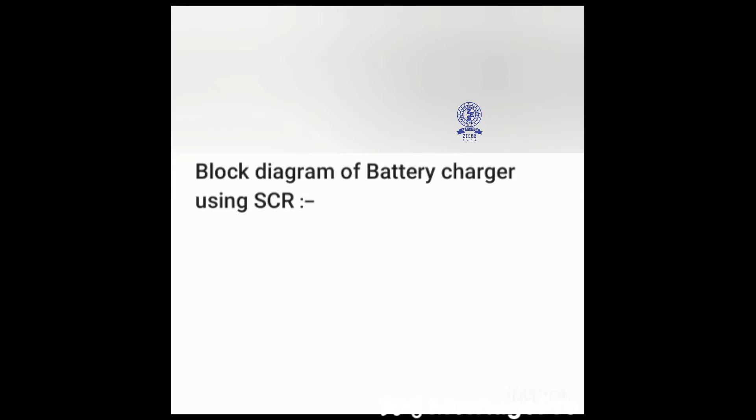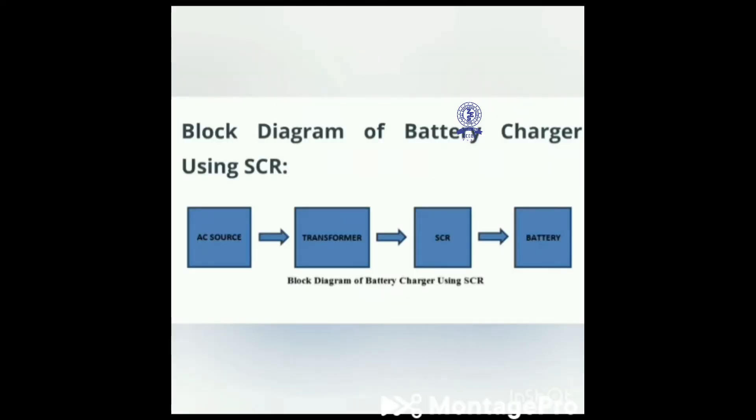Here is the block diagram of battery charger using SCR. The AC source is given to the step-down transformer which converts high AC voltage into limited AC. The filter removes noise, then gives that voltage to the SCR, which rectifies the AC and gives resulting voltage to the battery for charging. This is the mechanism of the battery charger using SCR.